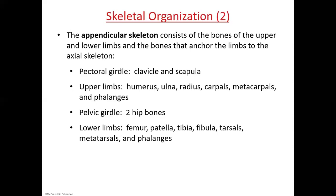Then we have the pelvic girdle, which is your hips — two hip bones that are each made of three fused bones — and then the bones of the lower limbs. So you have your femur, patella, tibia, fibula, tarsals, metatarsals, and phalanges. These are listed in order from proximal to distal in both cases.